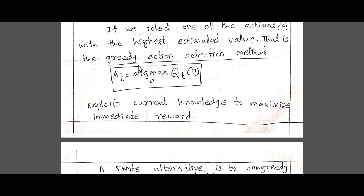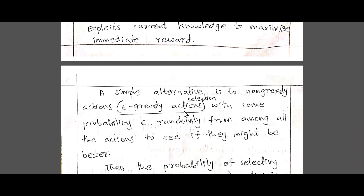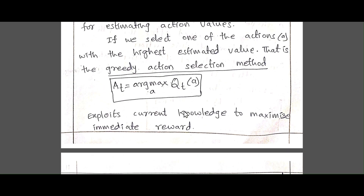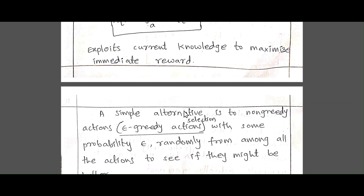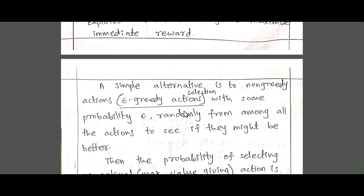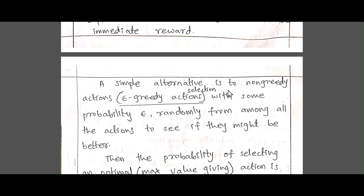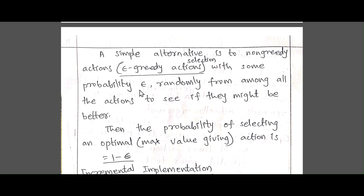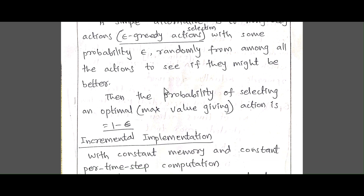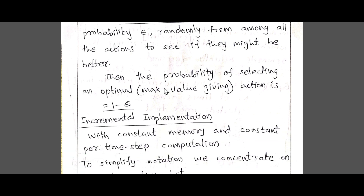By choosing the greedy action selection method — only choosing the highest estimated values — it may lead to exploiting current knowledge to maximize the immediate reward. We also need to explore. By balancing exploitation and exploration we may achieve greater rewards. A simple alternative method is epsilon-greedy action selection: with some probability epsilon, we select randomly from among all actions to see if they might be better.